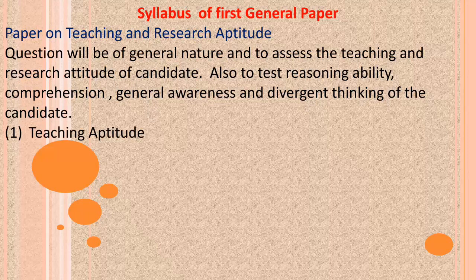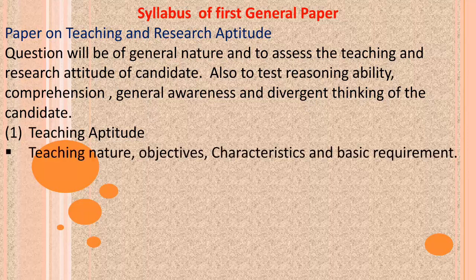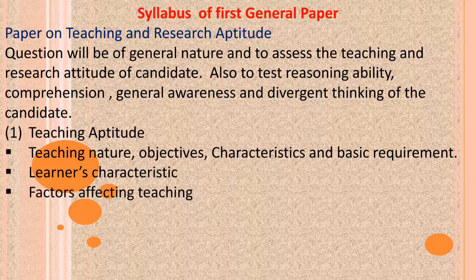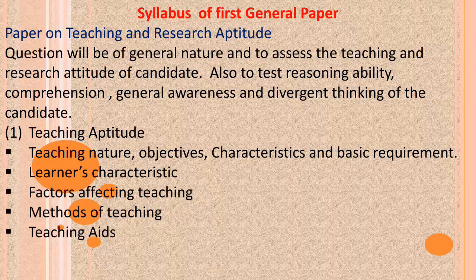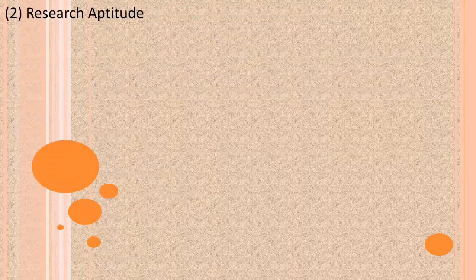The syllabus of this paper is divided into 10 parts. Part 1 is Teaching Aptitude, which covers teaching nature, objectives, characteristics and basic requirements, learner's characteristics, factors affecting teaching, methods of teaching, teaching aids, and the evaluation system.